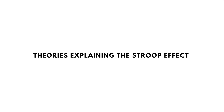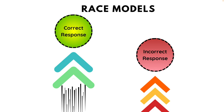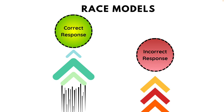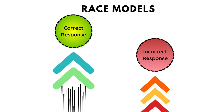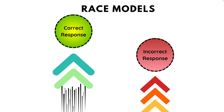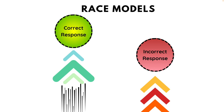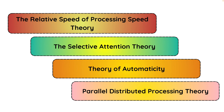Various theories have been used to explain the Stroop effect. These theories commonly fall under what is called the race class of models of cognition. The underlying notion is that both relevant and irrelevant information are processed in parallel but race to enter the single central processing unit of the brain during a response selection stage. The four main theories include the relative speed of processing theory, the selective attention theory, the theory of automaticity, and the parallel distributed processing theory.